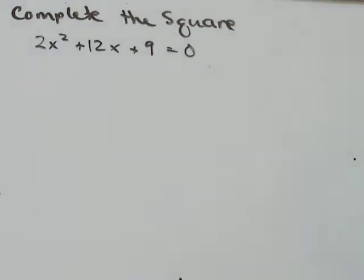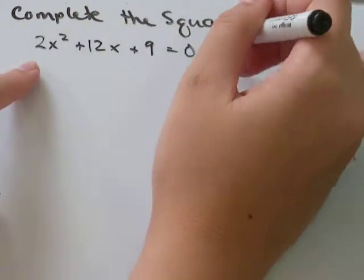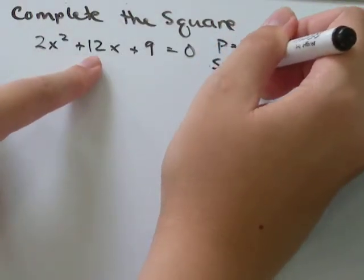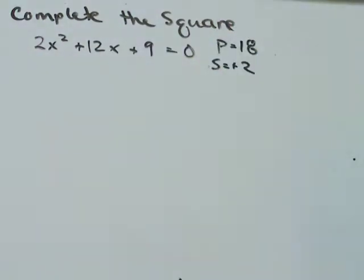So completing the square can be a nice alternative to factoring. Let's say you have a question like this. You've got 2x² + 12x + 9 = 0. You want to factor it, so you multiply these two. The product is 18, and the sum is 12. What two numbers multiply to 18 and add to 12?